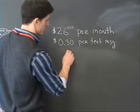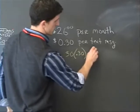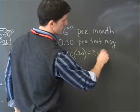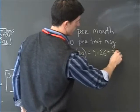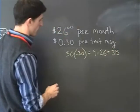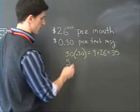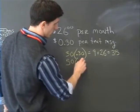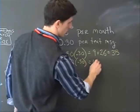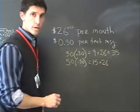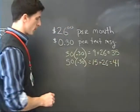For 30 texts at $0.30 a piece, that's going to net us $9 plus the original $26, for a total of $35 per month. If there were 50 text messages, we're going to multiply that by .3 again. That's going to give us $15 worth of text messages, and the $26 original charge gives us a $41 bill for the month.